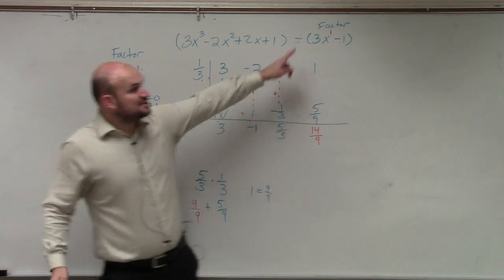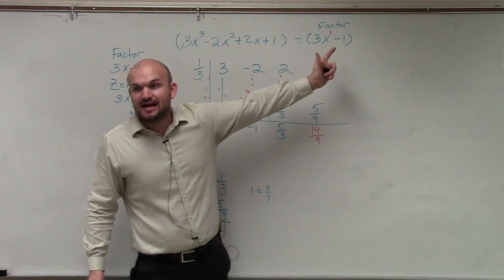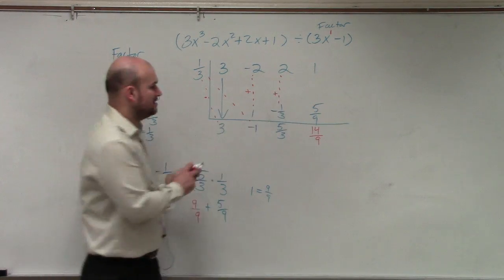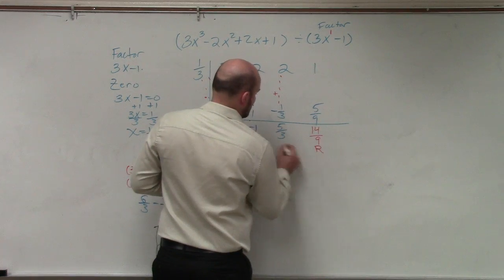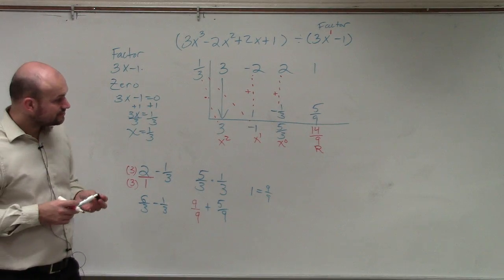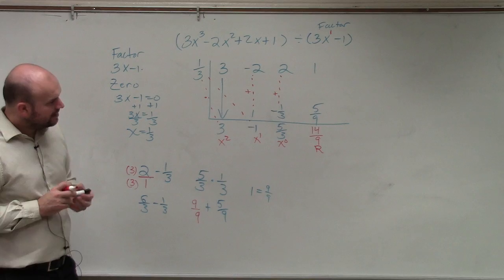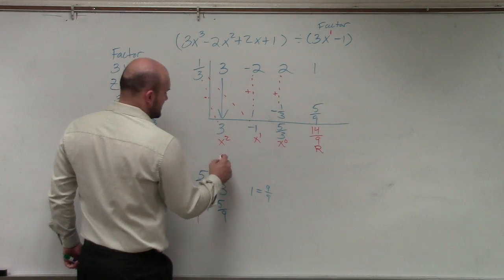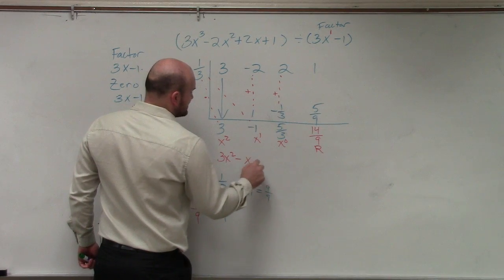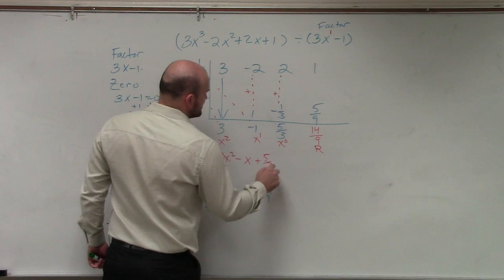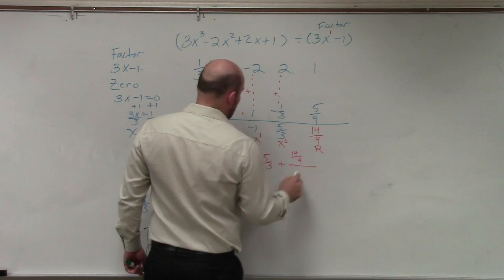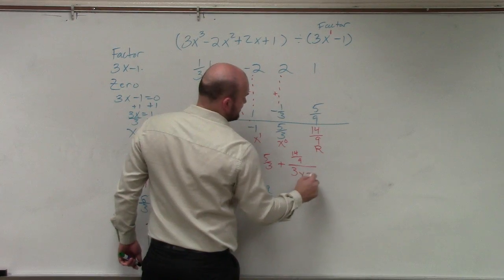So is this actually a factor? Does this factor actually evenly divide into that? No, it doesn't. However, can I still write the quotient? Yes. Here's my remainder: constant, linear, quadratic. And just remember, we can always write this as my quotient is 3x squared minus x plus 5 thirds plus 14 over 9 divided by your divisor, which is 3x minus 1.